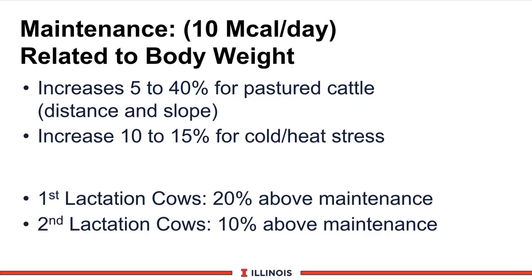Another energy cost is growth — very high in heifers and calves. For first-lactation cows, a good thumb rule is about 20% of maintenance costs are required for growth, so if you have 10 megs, about another 2 megs each day is spent on growing the animal to meet her mature size. For second-lactation cows, this is only 10%. Your heifer-rearing program will have a huge factor in determining if these numbers should be slightly higher or lower.